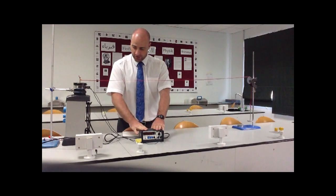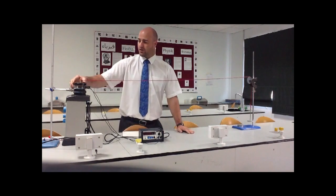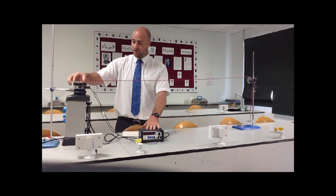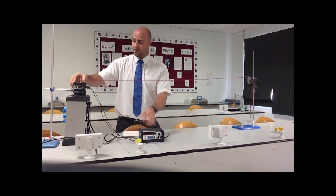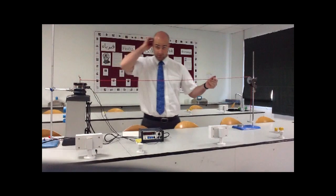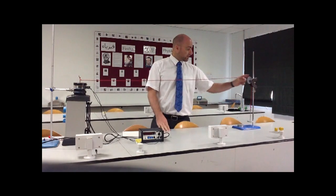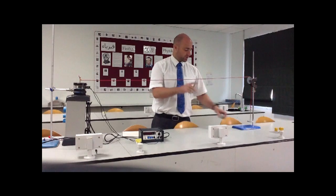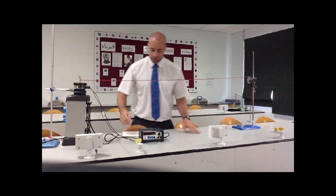We need a frequency generator. This is wired up to a vibration generator, which will tell this how quickly to vibrate. Then we have a string, in this case a rubber rope because it works very well, over a pulley with some masses so we can change the tension in this rope here.